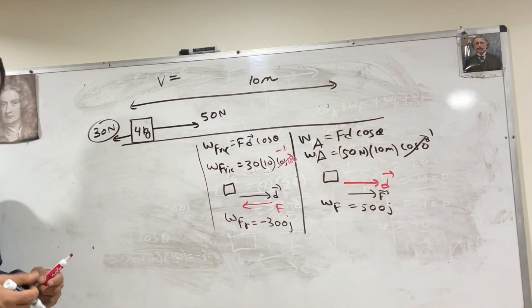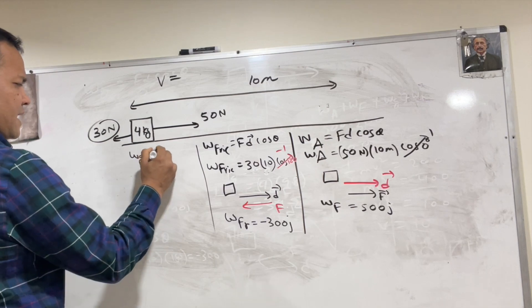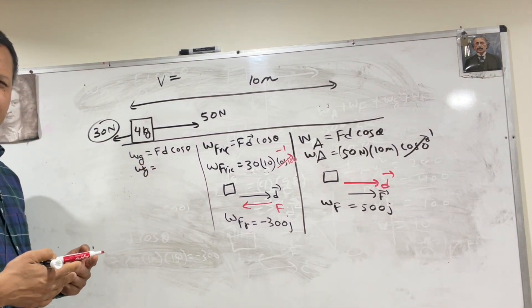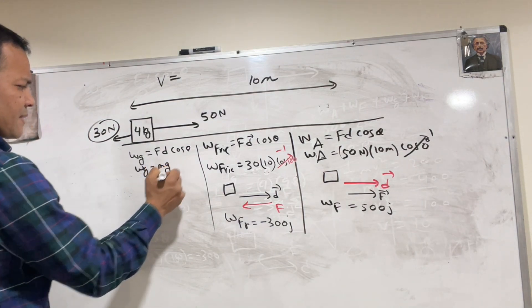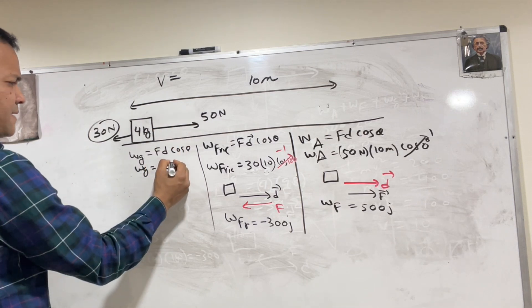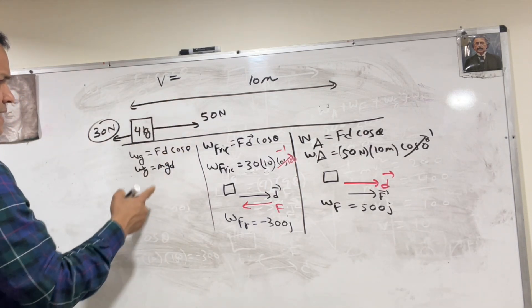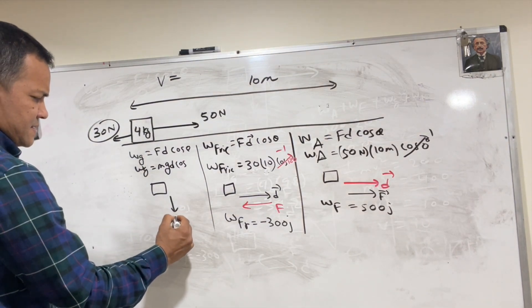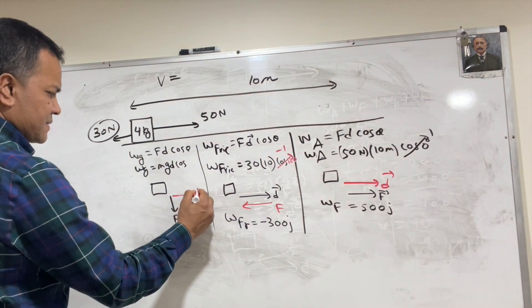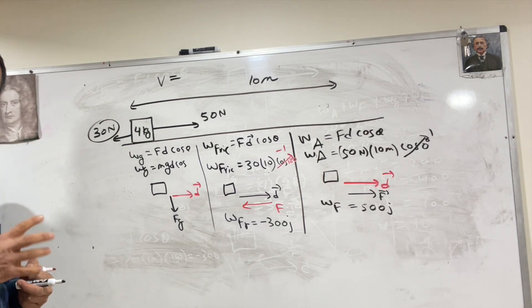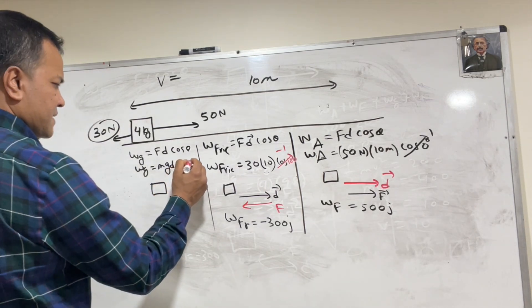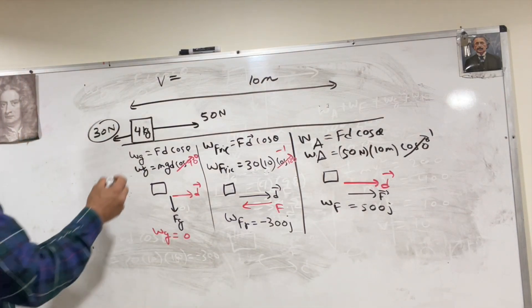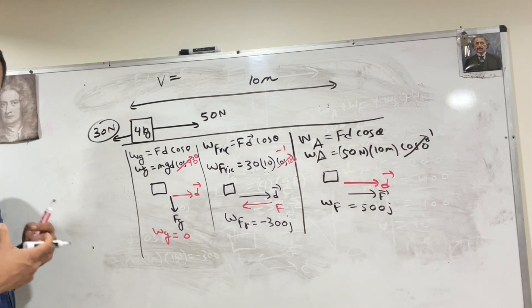Now work done by gravity: F times d times cosine theta. F is Mg and d is 10 meters. Let's find the theta — the force vector and displacement vector are perpendicular to each other, so theta is 90 degrees. Cosine 90 degrees is zero, so work done by gravity is zero. Work done by normal force will also be zero.